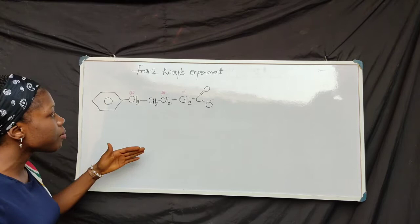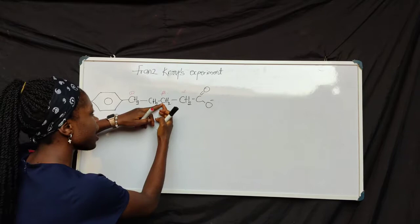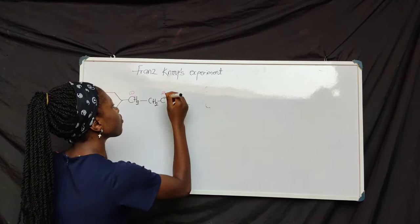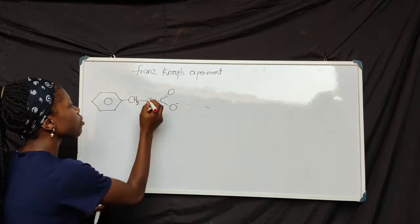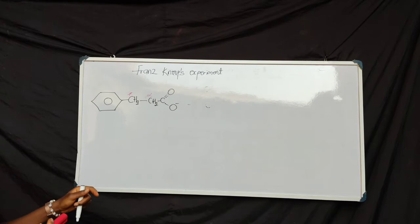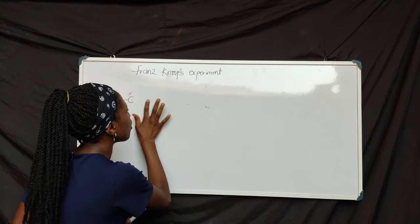Knoop observed that in the metabolism of fatty acid, the beta-carbon is oxidized to the carboxylic group, and if this is oxidized, this fragment is cleaved off. So let's assume the beta-carbon becomes oxidized to the carboxylic group. This is no longer a beta-carbon and this is no longer an omega-carbon — this becomes the alpha-carbon and this is the beta-carbon. The oxidation again took place on the beta-carbon, which is oxidized to the carboxylic group, and this is also cleaved off.